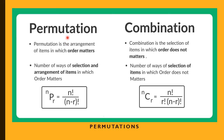What is the difference between permutation and combination? Permutation is the arrangement of items in which order matters. Combination is the selection of items in which order does not matter. Permutation is the number of ways of selection and arrangement of items; combination is the number of ways of selection of items in which order does not matter.